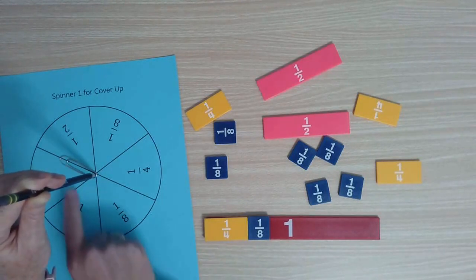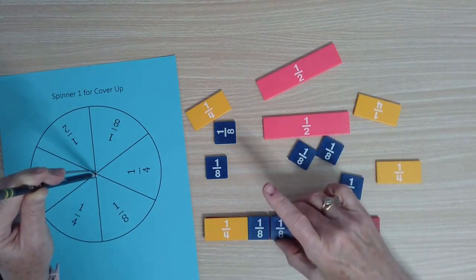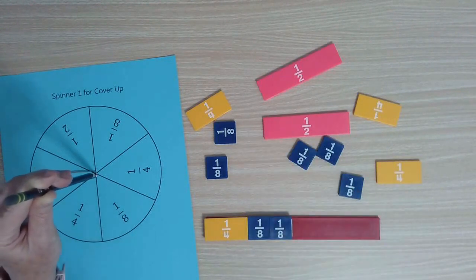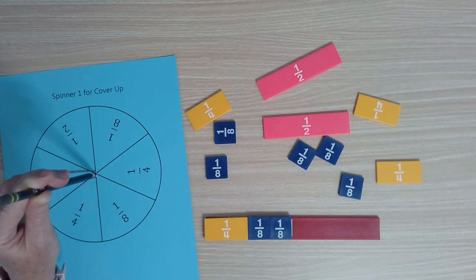We spin again, and I'm going to pretend that's an eighth. Now I can put the other eighth on there, and a great question at this point is, what do you notice about those two eighths and that one-fourth piece? The students can't help but recognize that they are equivalent.